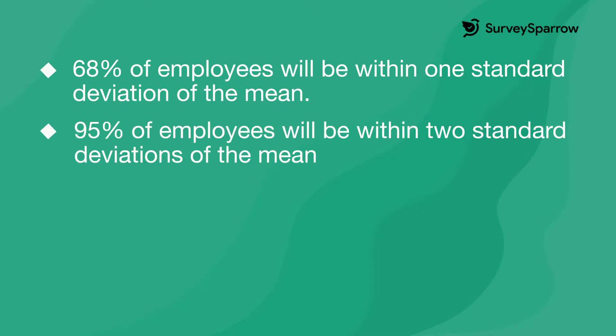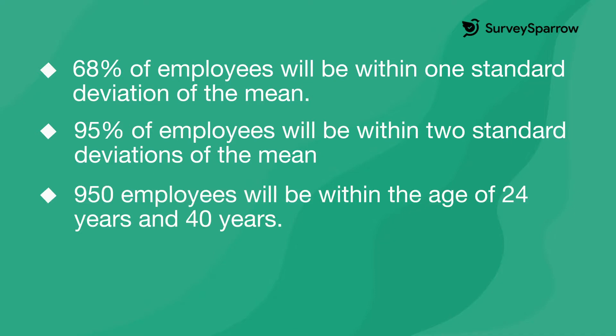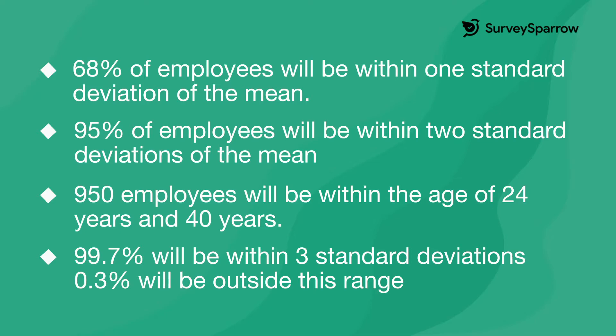Since 95% of employees will be within two standard deviations of the mean, 950 employees will be within the age of 24 years and 40 years. And 99.7% will be within three standard deviations, meaning only 0.3% — roughly three employees — will be either less than 20 years or more than 44 years in age.